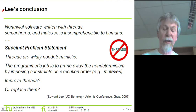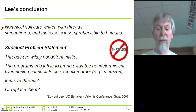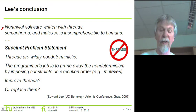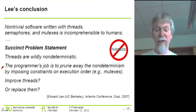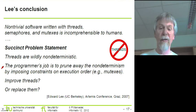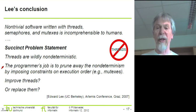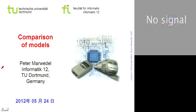Looking at the general properties of imperative programs, we have seen that programming with threads can lead to problems. Edward Lee's conclusion is that non-trivial software written with threads, semaphores, and mutexes is incomprehensible to humans, and that threads are widely non-deterministic. The programmer's job is to prune away non-determinism by imposing constraints on execution order like mutexes. Nevertheless, using imperative languages is still rather widespread in the application development of embedded and cyber-physical systems. This concludes the first section of this presentation.